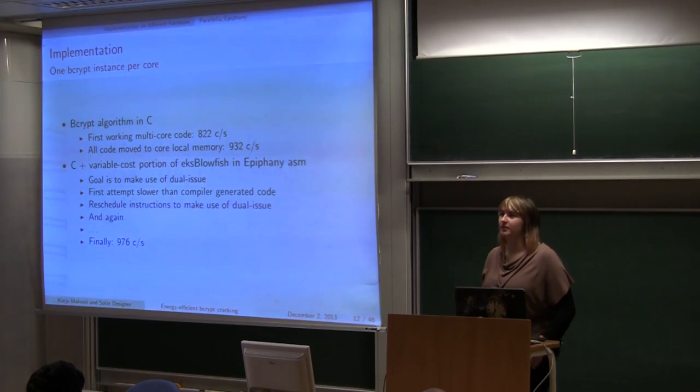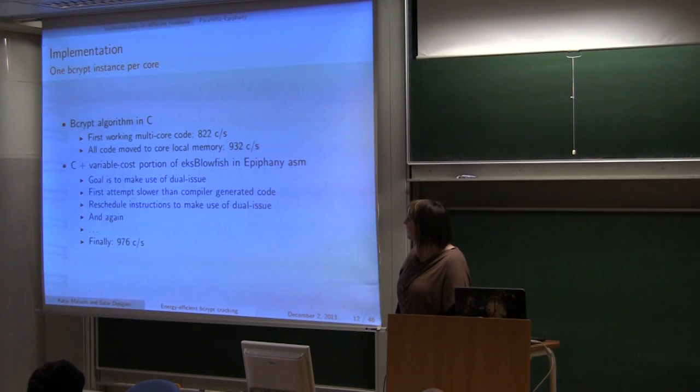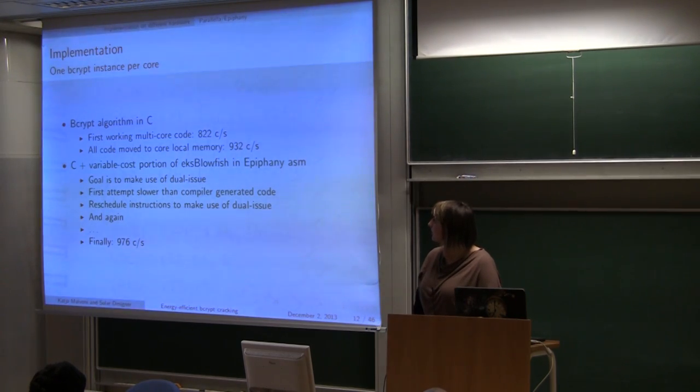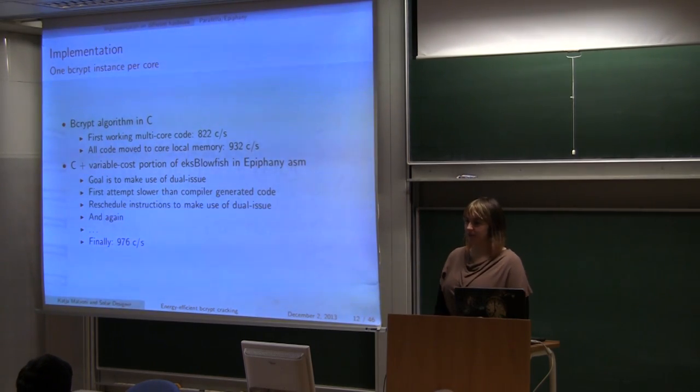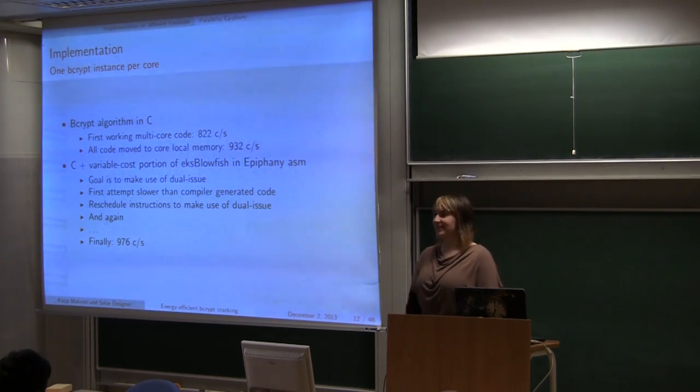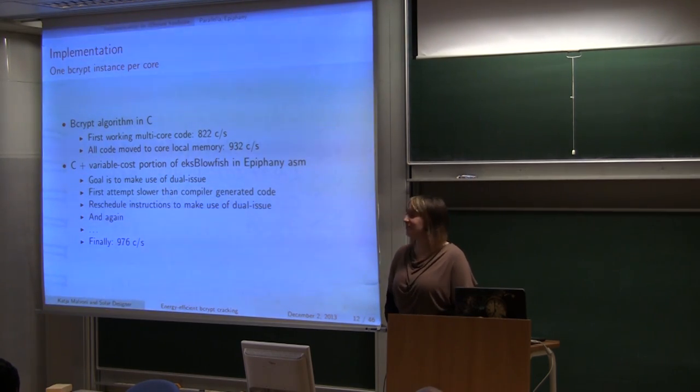So this is how it all started somewhere in June. First algorithm was written only in C. And first working multicore code had performance of 822 cracks per second. And I still remember that moment when the thing actually worked. I was so happy to see it working that I didn't care about performance. It works. And then after all that enthusiasm, someone showed me other Bcrypt performances. And I was, oh, well, at least it works.